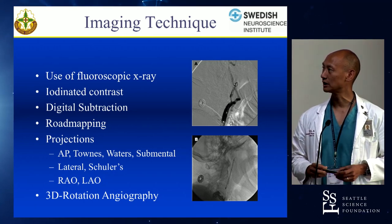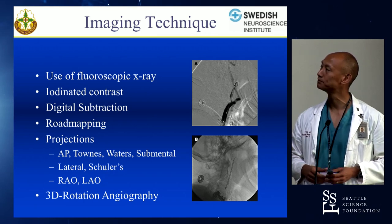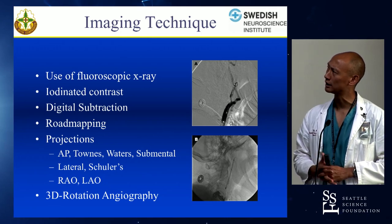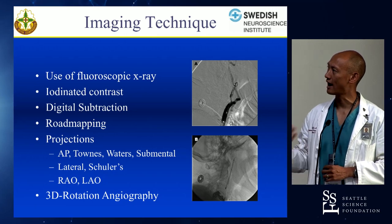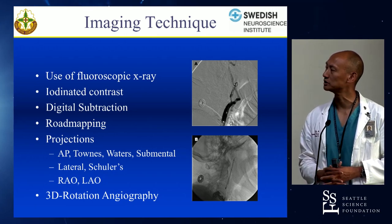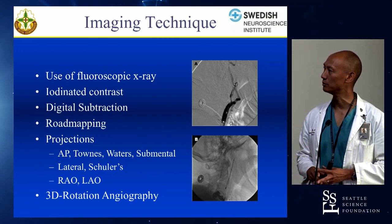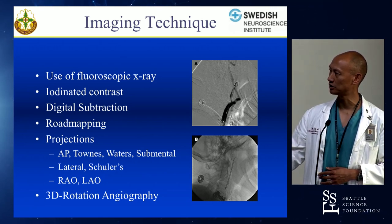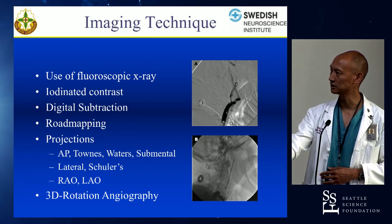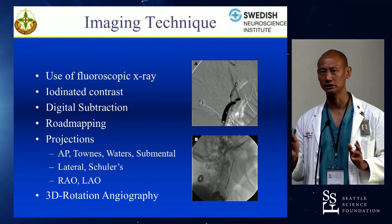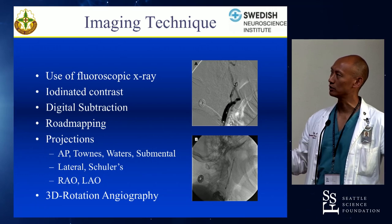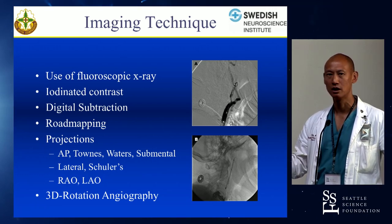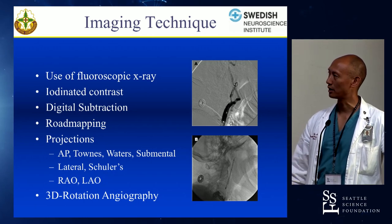As a quick background for this one slide: the imaging technique uses fluoroscopic x-ray energy. We use iodinated contrast, and that contrast creates the ability to see active movement of flow within the vascular system. With the advent of digital subtraction, you have the ability of taking a still shot — an initial subtraction still shot — and then the computer subtracts it pixel by pixel. That's the term digital subtraction.